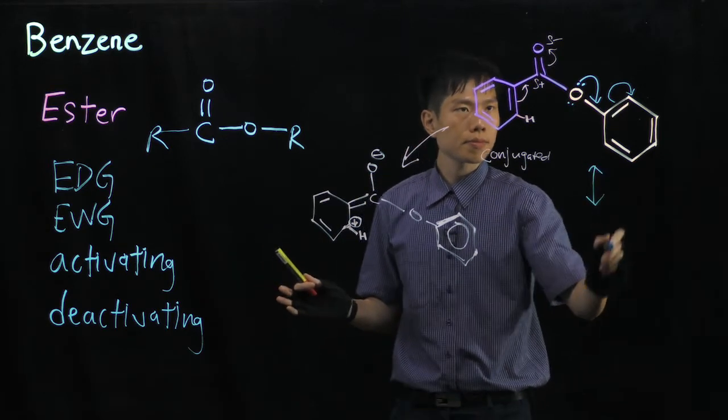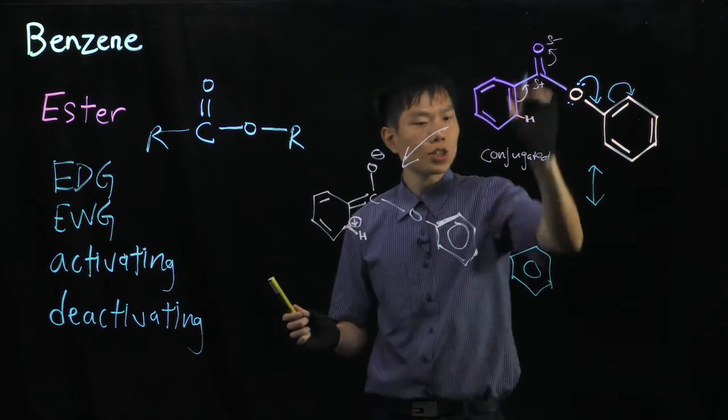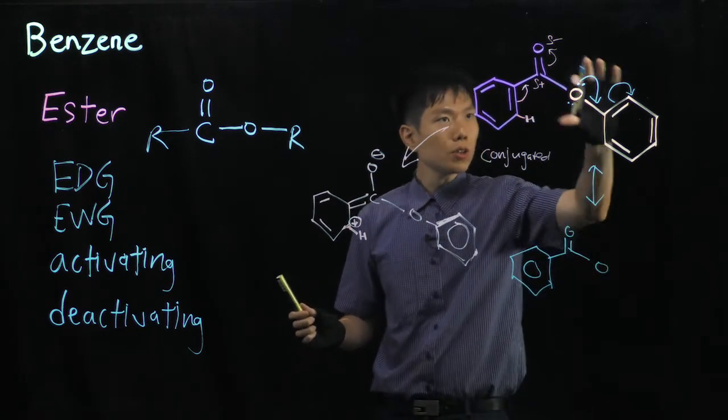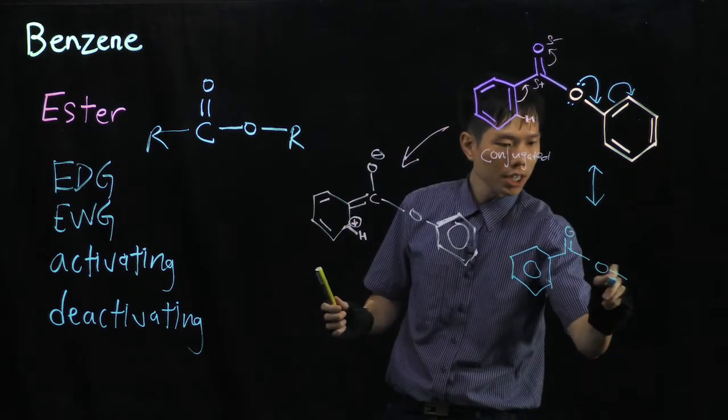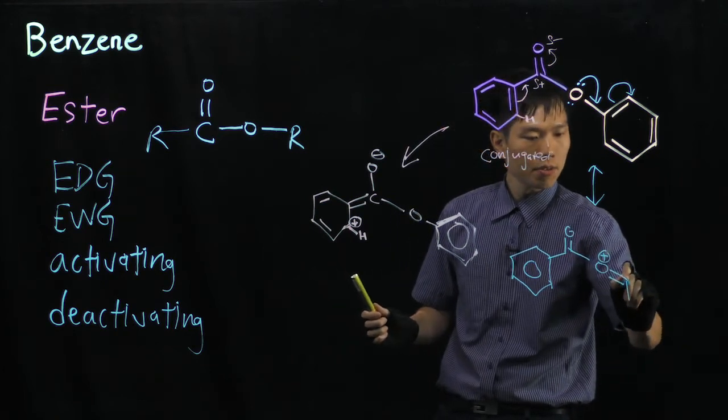So as a result, again here, the left ring, I don't touch it first. So imagine there's no change. Only the right side, electron pushing. We have double bond, with this oxygen carries a positive charge and a benzene ring.